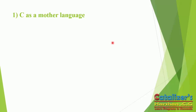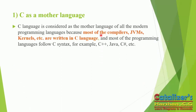C as a mother language: C language is considered as the mother language of all modern programming languages because most compilers, JVMs, kernels, etc. are written in C language. Most programming languages also follow C syntax — for example, C++, Java, C#, etc.